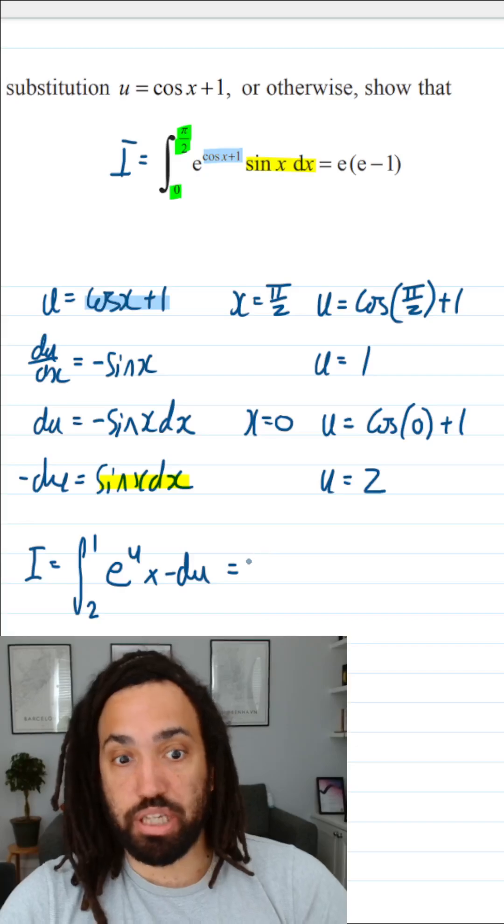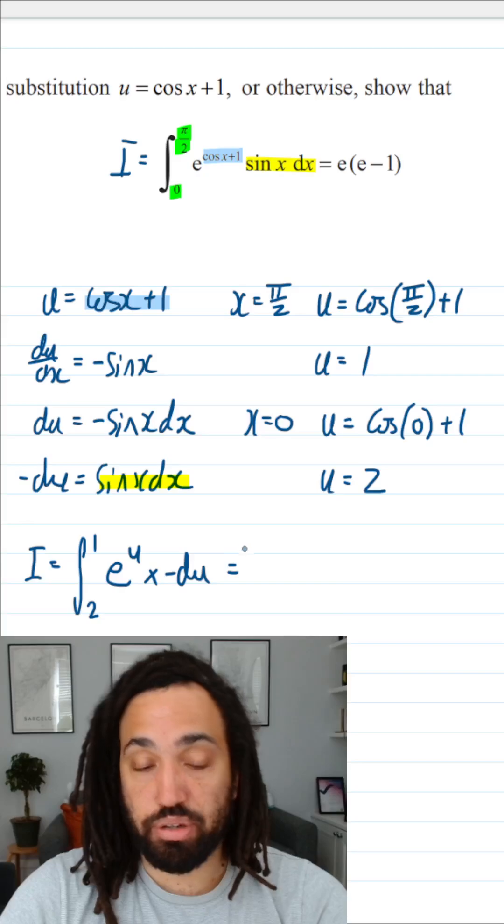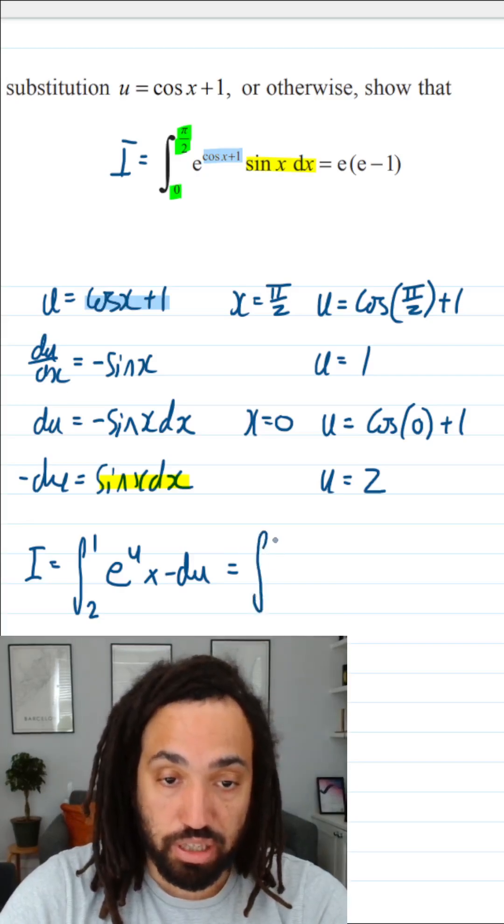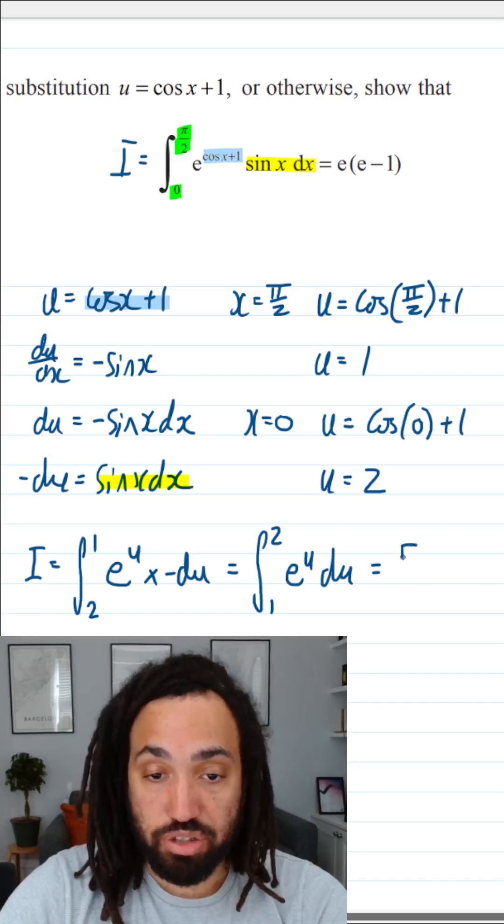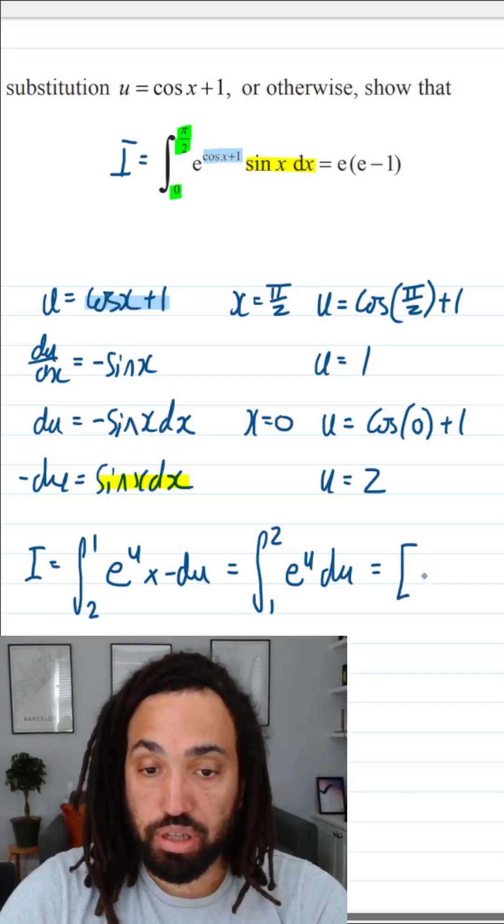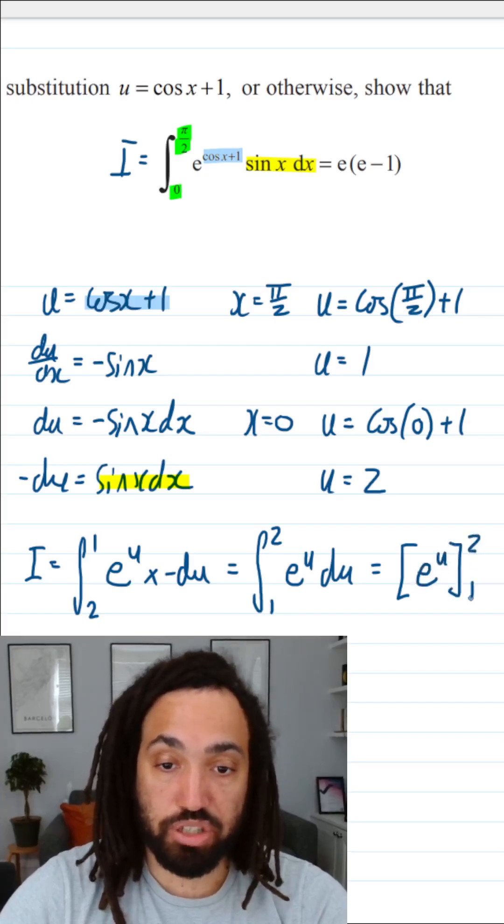Here's a tip: if you want to get rid of this minus, you can just swap the limits over, and that's the same as multiplying through by negative. So you could write it like this. When we integrate e to the u, that gives you just e to the u, and that is between 2 and 1.